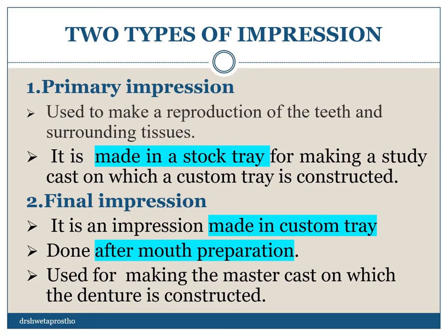Two types of impressions are made for the removable partial denture fabrication: one is the primary impression and second is the final impression. They are used to make the reproduction of the teeth and the surrounding tissues. The primary impression is made in a stock tray for making the study cast on which the custom tray is constructed, and it is used for designing and surveying. This primary impression is made before the mouth preparation. The final impression is made in the custom tray, after the mouth preparation is done, and we make the master cast from it on which the denture is constructed.